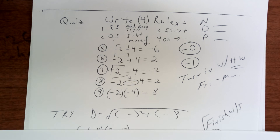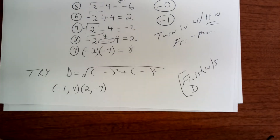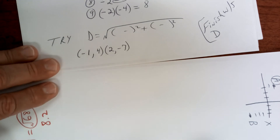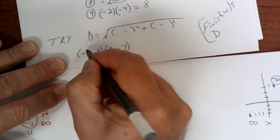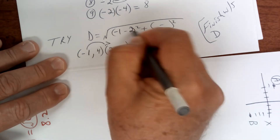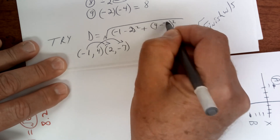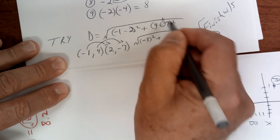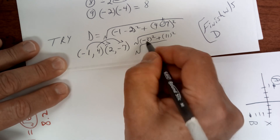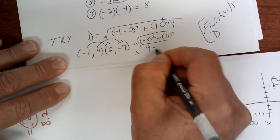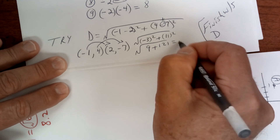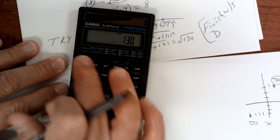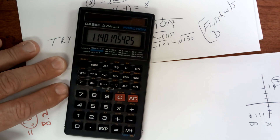Now find the distance on a new sheet of paper. Your X's go in front: negative 1 and 2, then 4 and negative 7. This becomes negative 3 squared, this becomes plus 11 squared. 3 times 3 is 9, 11 times 11 is 121 — add them to get the square root of 130. If you don't have a calculator, that's good enough. With a calculator: 130 shift square root gives 11.4.